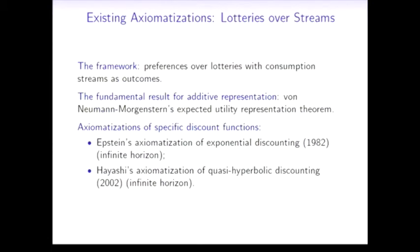Another possible approach is this setting when we allow our preferences to be over lotteries, and these lotteries have the whole consumption stream as an outcome. Working in that particular environment, Epstein and Hayashi axiomatize exponential and quasi-hyperbolic discounting. In order to obtain this additive representation, they used the very famous theorem by von Neumann and Morgenstern.